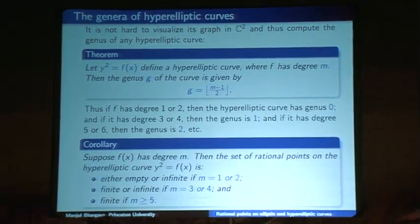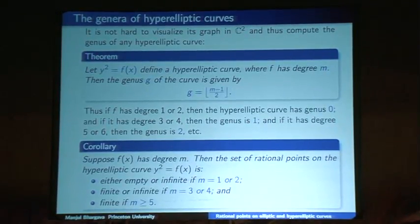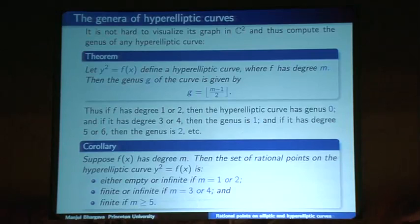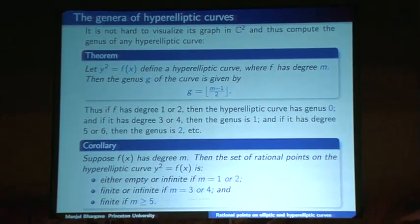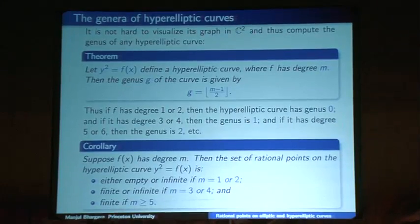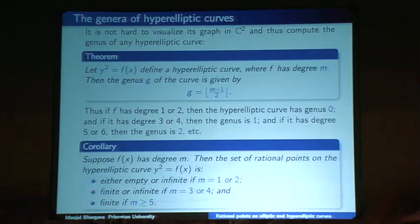In the case of degree 1 or 2, there are known algorithms to find all the rational points. But once the genus is at least 1 — once the degree of f(x) is at least 3 — we don't know how to find all the rational points. We can say there are definitely finitely many if the degree is 5 or more, but how big that finite number is remains ineffective, and there's no known algorithm for a given equation.